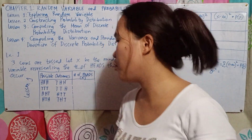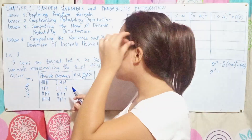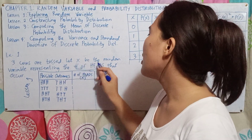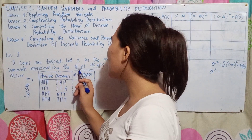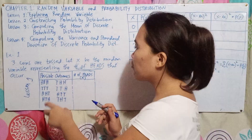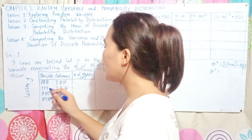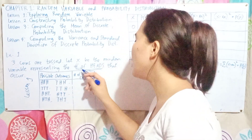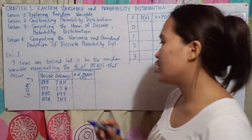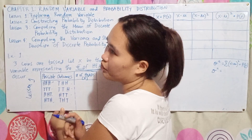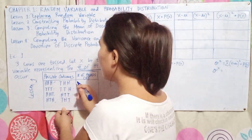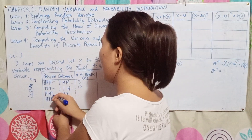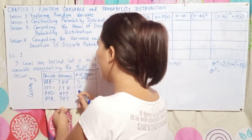Since ang random variable natin is number of heads, let X be the random variable representing the number of heads. From the possible outcomes, isa-isa natong ihap kung pila ang number of heads. So the first outcome has 3 heads, so 3. Next, since walang heads, so 0.